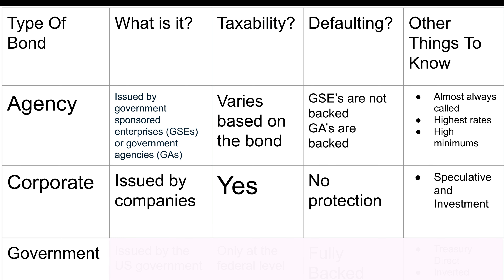Moving on to corporate bonds — these are really the simplest of the three. They're issued by companies or corporations; it's in the name. They're fully taxable, and in terms of defaulting, they are not protected, so what you actually get out of a defaulted corporate bond really just depends on the situation, but it's not going to be a whole lot. There are speculative corporate bonds, which are on the riskier end but have higher rates, and then investment-grade corporate bonds, which are much safer but have lower rates.